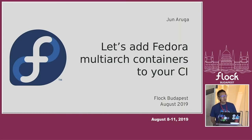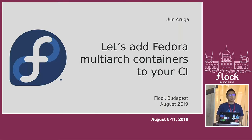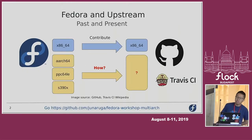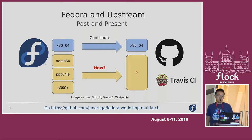Today, I want to talk about how to add Fedora multi-architecture containers to your CI, to your upstream CI, because now we need to work with multi-architecture RPM packages. In the past, working with only x86-64 worked, but now we need to work with other architecture RPM packages. We need to fix architecture-specific issues, sending pre-requests to upstream.